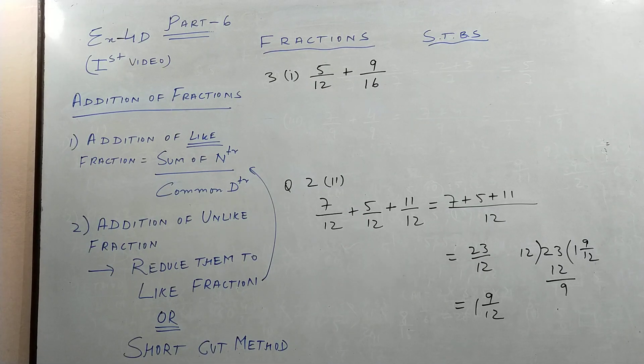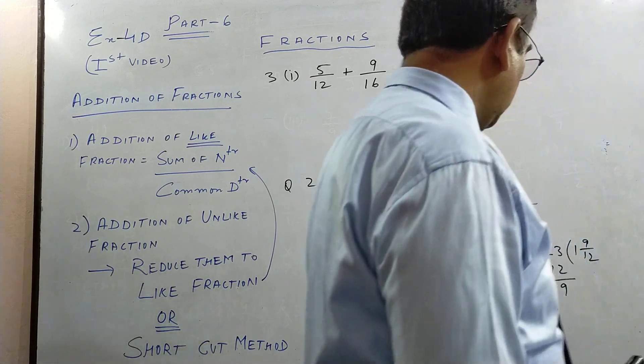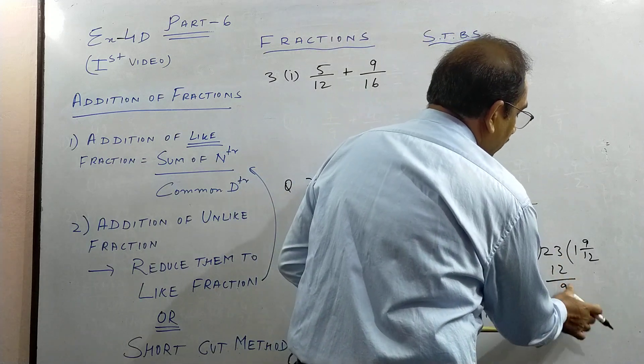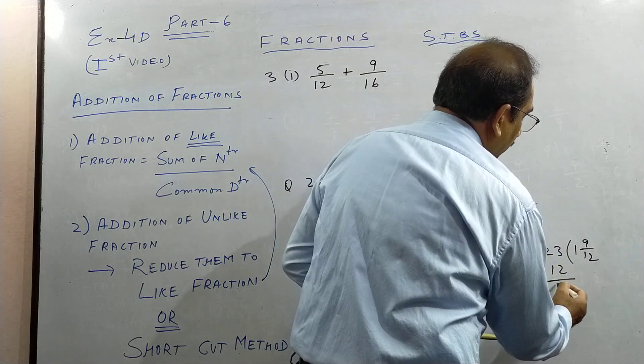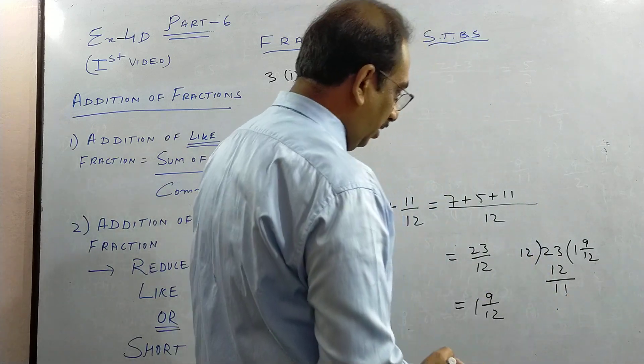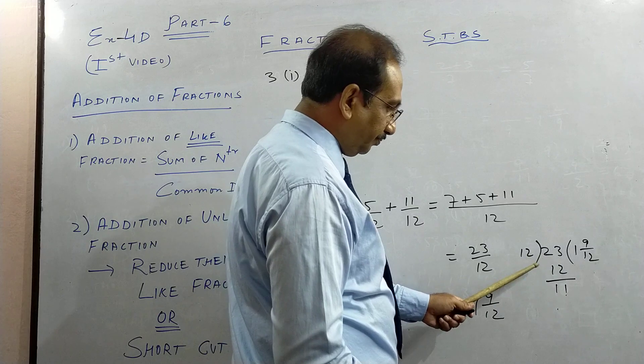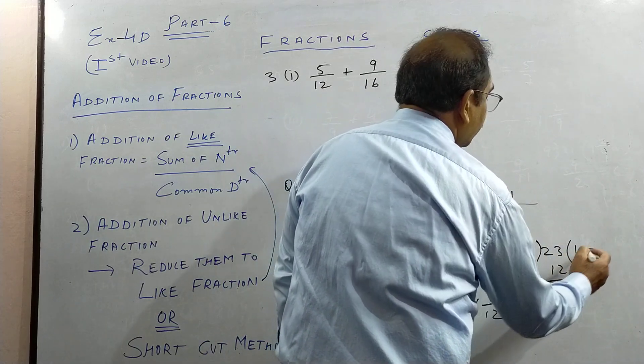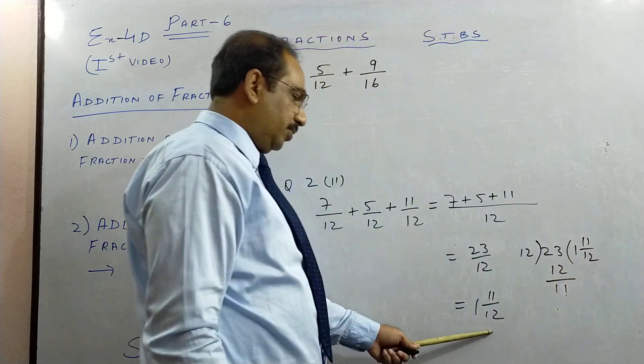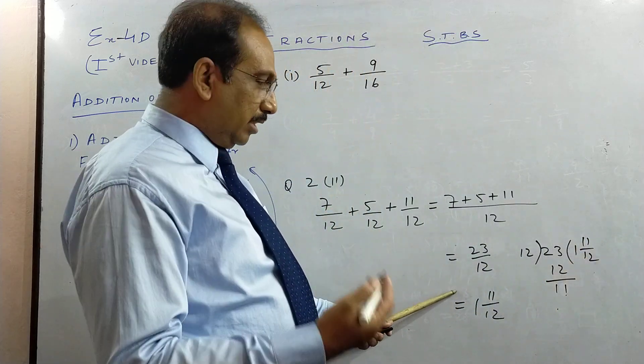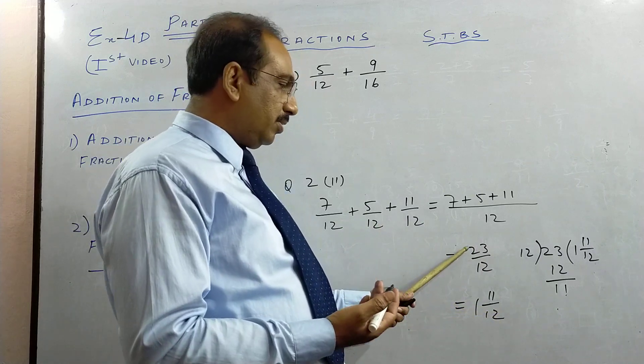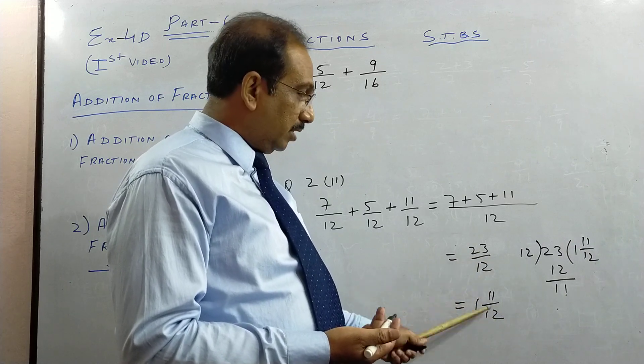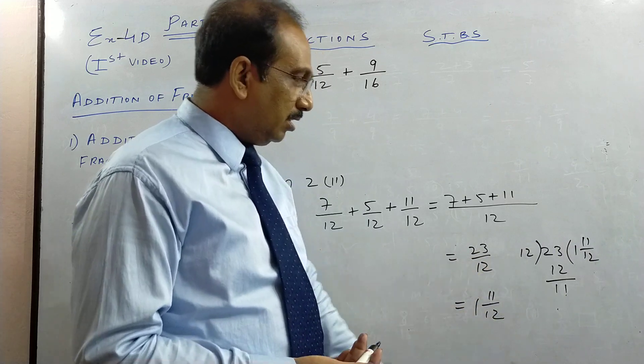One very small mistake is done. If you subtract, you will get 11, 23 minus 12. So this quotient upon remainder will be 11 by 12. So 12 ones are 12. You can convert mixed fraction back to check whether it is correct or not. 12 ones are 12 plus 11, 23 by 12. So kindly rectify.